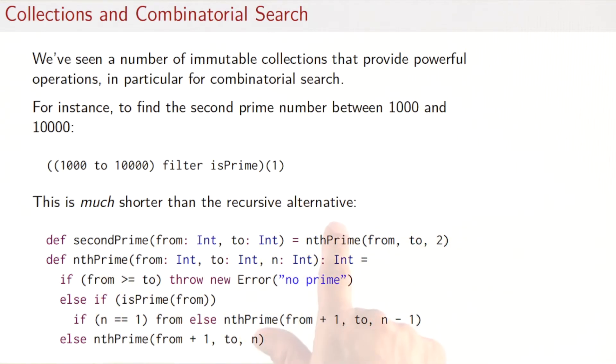This is much shorter than the recursive alternative, which you see down here, where there's a function secondPrime, which finds the second prime number in a given interval between from and to, and that in turn calls a more general function nthPrime, which takes the nth prime number in, again an interval between from and to, and that nthPrime has the usual recursive setup to iterate through the interval between from and to. Feasible, but definitely much bulkier and less elegant than this simple expression here.